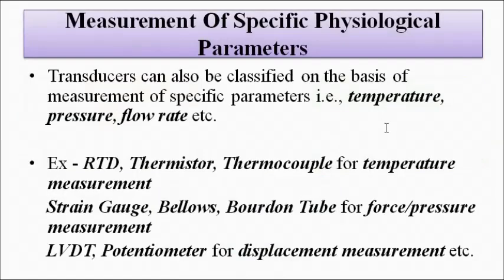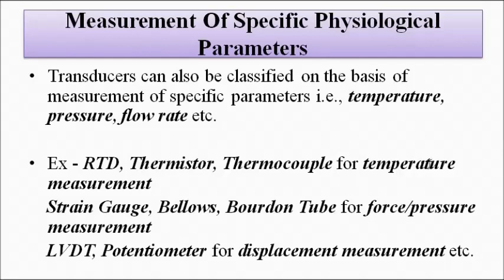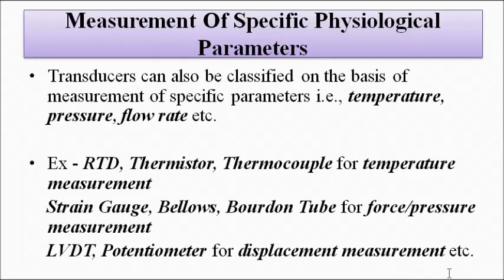Next, classification on the basis of measurement of specific physiological parameters. For example, RTD, thermistor, and thermocouple all respond to temperature — so they are temperature transducers. Strain gauge, bellows, and Bourdon tube are used for measurement of force or pressure — so they are force or pressure transducers. LVDT and potentiometer are used for measurement of movement, motion, and displacement — so they are displacement transducers. Their operating mechanisms may differ, but they serve the same measurement purpose.